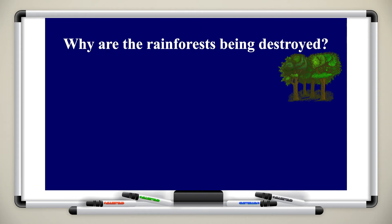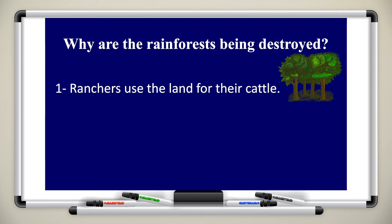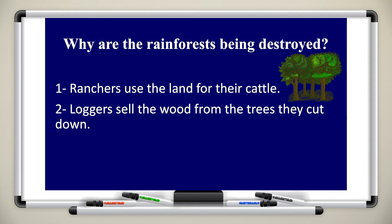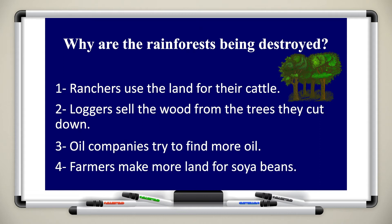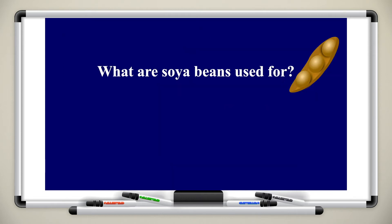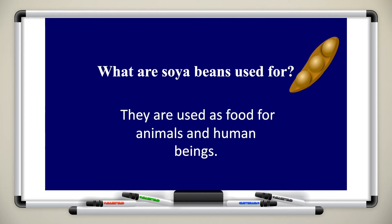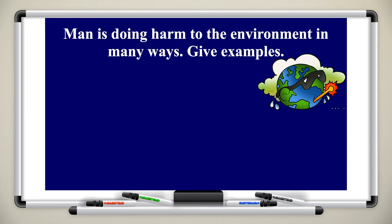Why are the rainforests being destroyed? From the passage, ranchers use the land for their cattle, loggers sell the wood from the trees they cut down, oil companies try to find more oil and drill for it, and farmers make more land to grow soya beans. What are soya beans used for? They are used as food for both animals and human beings.